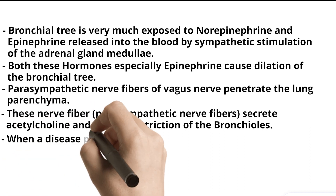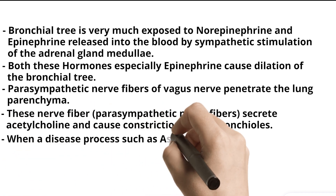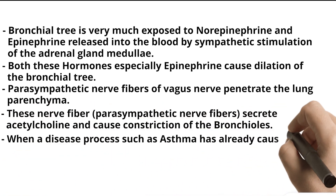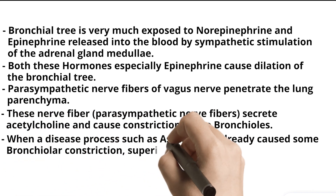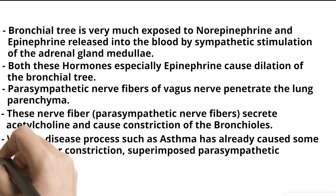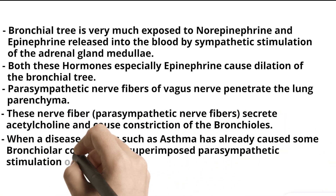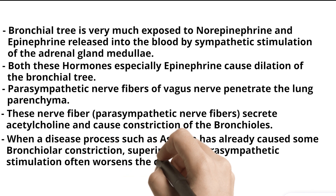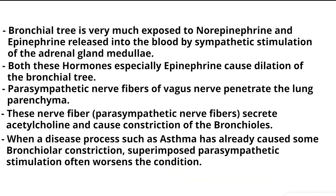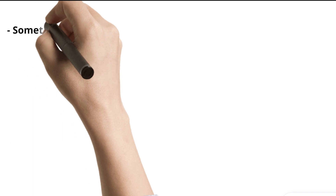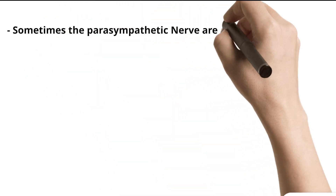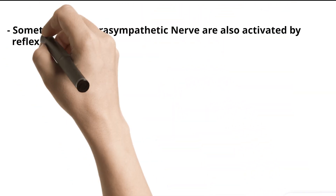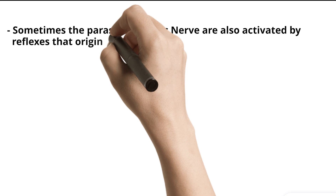When a disease process such as asthma has already caused some bronchiolar constriction, superimposed parasympathetic stimulation often worsens the condition. Sometimes the parasympathetic nerves are also activated by reflexes that originate in the lungs.